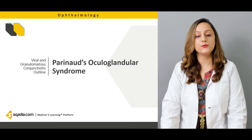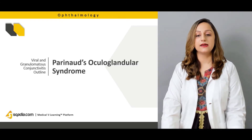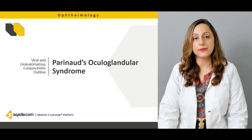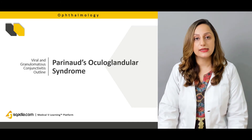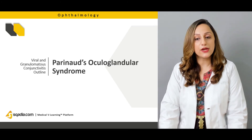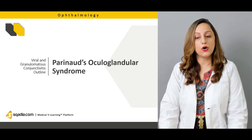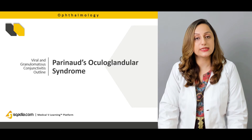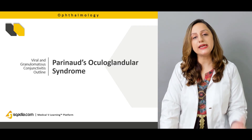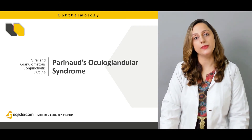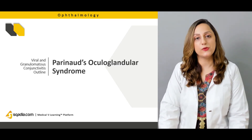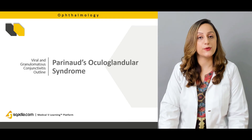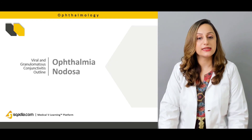Then we'd be discussing a very important syndromic condition — that is Parinaud's oculoglandular syndrome. We'd be discussing and relating this syndrome with the viral conjunctivitis cases that we've already discussed.